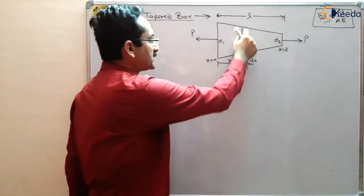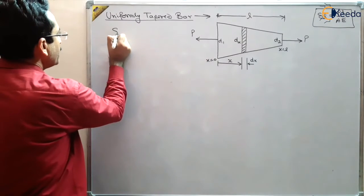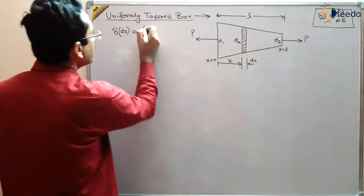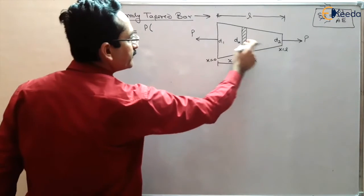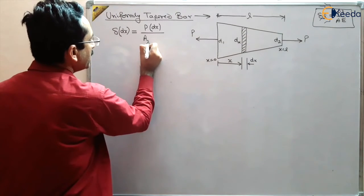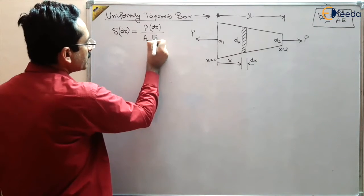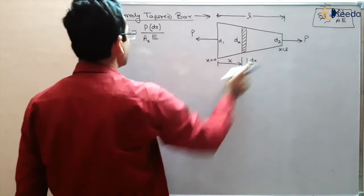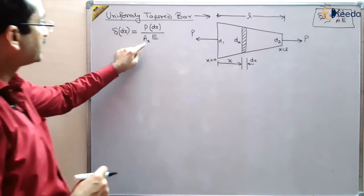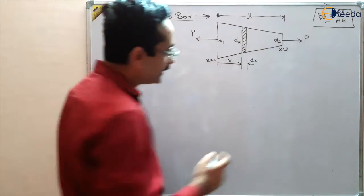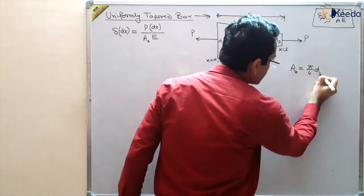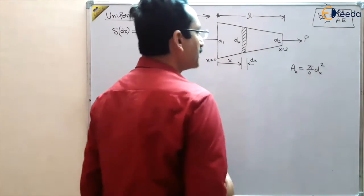So how do we find the deformation in this small element? We can use the same formula: the change in deformation in dx equals P times dx (the small length) divided by the area Ax times E, where Ax is the area at distance x and E is the modulus of elasticity. So Ax equals pi by 4 times D subscript x squared. This is the area at distance x.